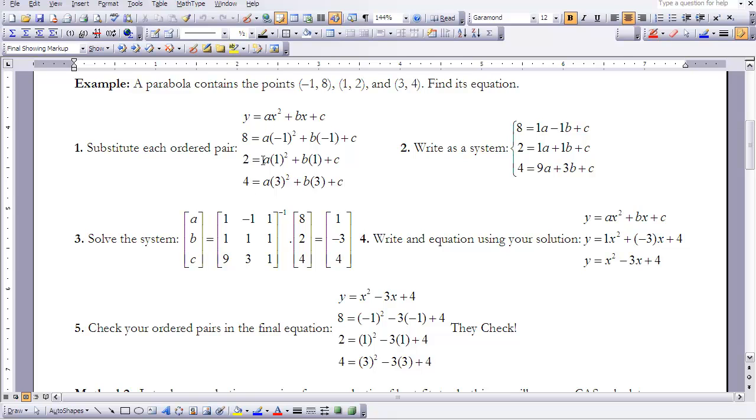Let me simplify this. So if I take a negative 1 squared, that gives me 1a. And a negative 1 times b plus c would equal 8. 1 squared is 1, so that makes my equation 2 equals 1a plus 1b plus c. And then if I go down to the bottom one, 4 will equal 3 squared, which is 9a plus b times 3 plus c. So as you can see here, I have my system.